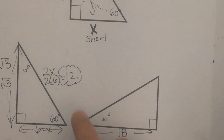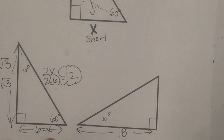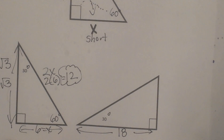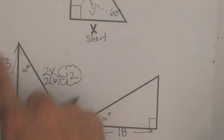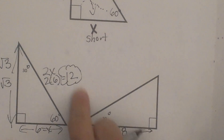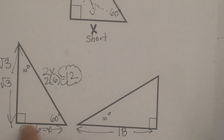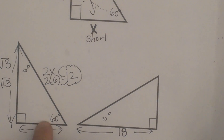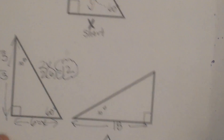That one is fairly easy. The hypotenuse to the short leg is a 1 to 2 ratio. This is what I call a forward problem — if you are given the short leg, just multiply for the long leg or multiply for the hypotenuse.